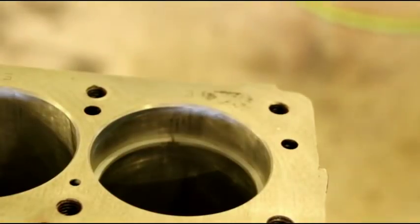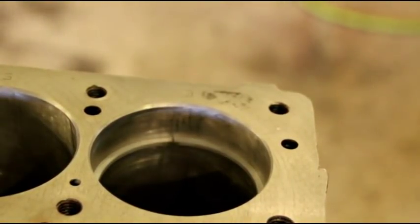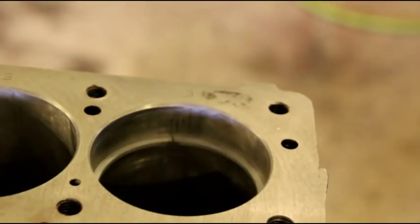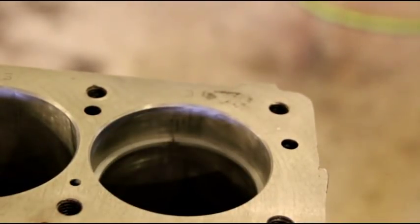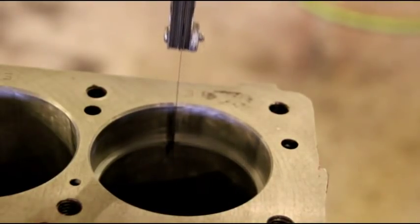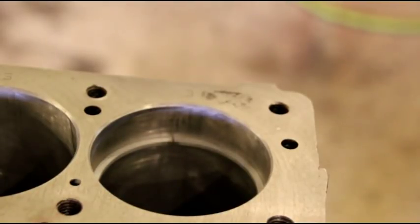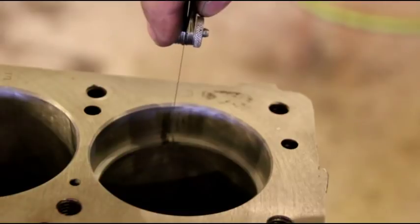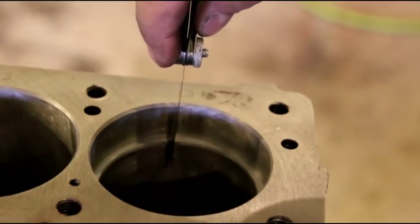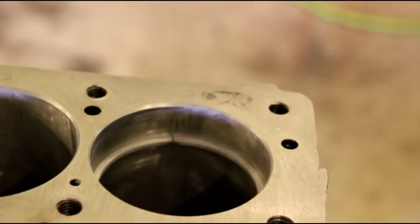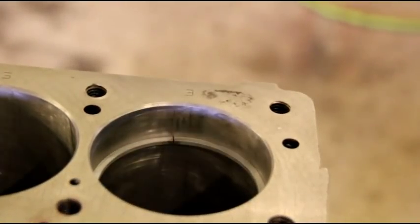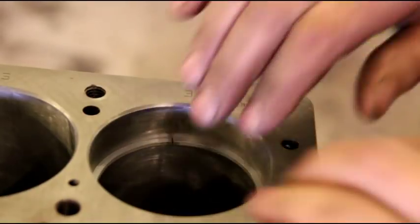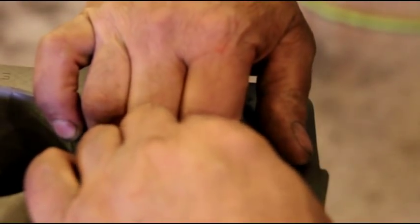Now on a 60 over bore, that end gap should be anywhere between seven thousandths to seventeen thousandths. So I'm going to take a seven thousandths feeler gauge, and we'll take an eight thousandths, and just a little bit of drag on the eight thousandths. So you're not going to get your end gap right if your bore is off. We know our bore is right on the money here, so the piston ring gap worked out just perfect.